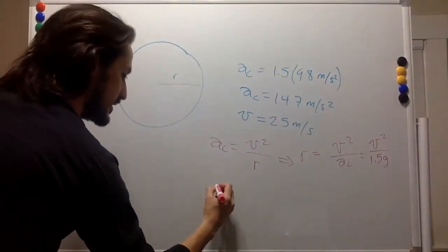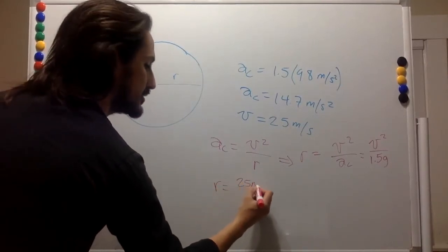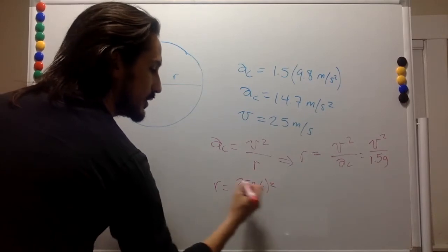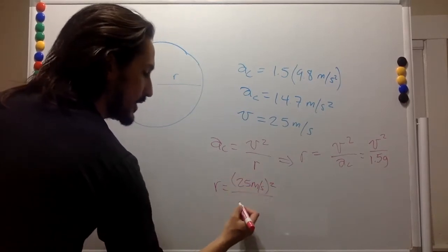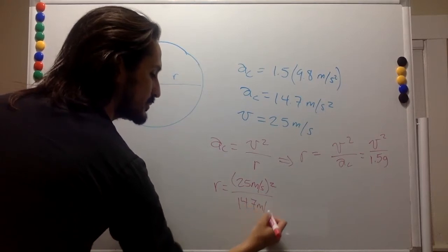So then the radius is going to be 25 squared meters per second squared divided by 14.7 meters per second squared.